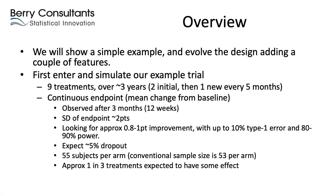There'll be two initial treatments, and then a new treatment will become available roughly every five months. The disease we're simulating has a continuous endpoint — we're scoring patients on their mean change from baseline over 12 weeks, with a standard deviation of two points. We're looking for improvement compared to control in the range of 0.8 to one point. Because this is phase two, we're prepared to accept a type 1 error of about 10%, with about 80 to 90% power to find an effective treatment.